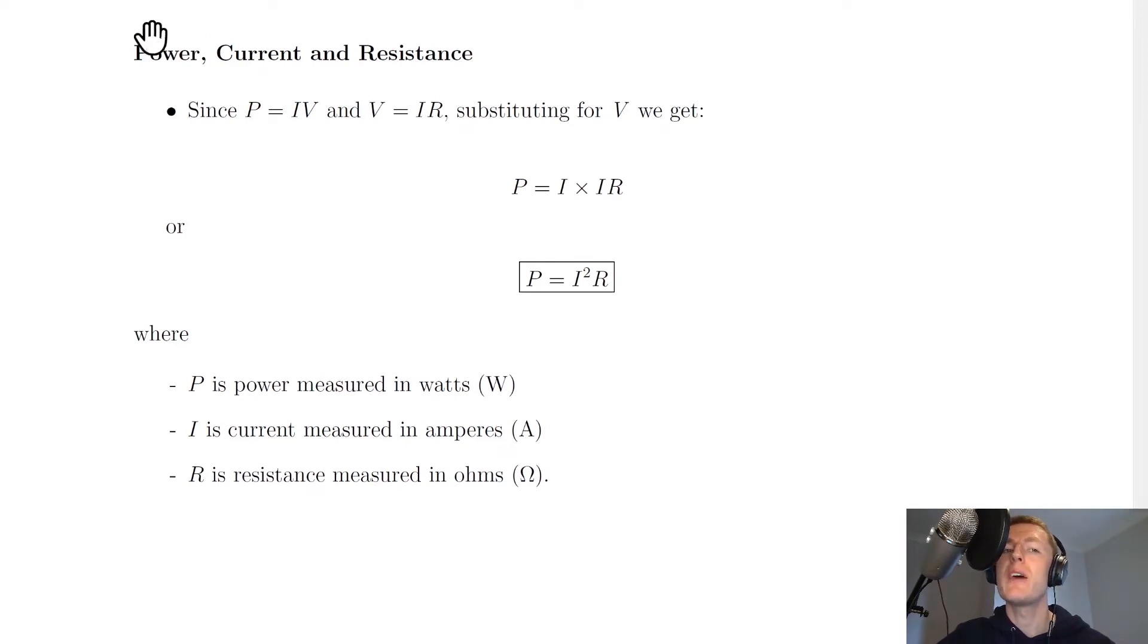The next power relationship we have is one involving power, current, and resistance. We can use equations we've already seen to derive an expression for power in terms of current and resistance. Since we now know that power equals current times voltage, P equals IV,